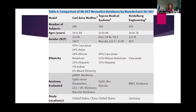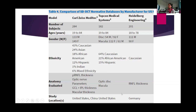The Carl Zeiss model includes a varied demographic for ethnicity, whereas Heidelberg uses only a Caucasian ethnicity. Carl Zeiss includes all anatomy parameters; Topcon has optic disc and macula; Heidelberg has retinal nerve fiber layer. Study locations include the United States and China for Carl Zeiss, United States for Topcon, and Germany for Heidelberg. These are pretty limited normative databases that can never fully cover the varied appearance and structure of the optic nerve we see in patients, and imaging can provide artifacts that do not represent true ocular disease but are secondary to limitations of imaging technology.